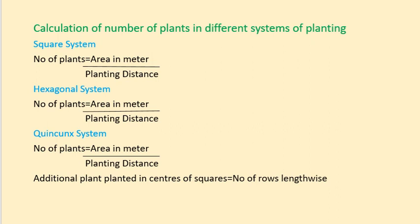Calculation of number of plants in different systems of planting: For the square system, the number of plants equals area in meters divided by planting distance. For the hexagonal system, the number of plants equals area in meters divided by planting distance. For the quincunx system, the number of plants equals area in meters divided by planting distance, plus the additional plant planted in the center of each square, multiplied by the number of rows lengthwise.